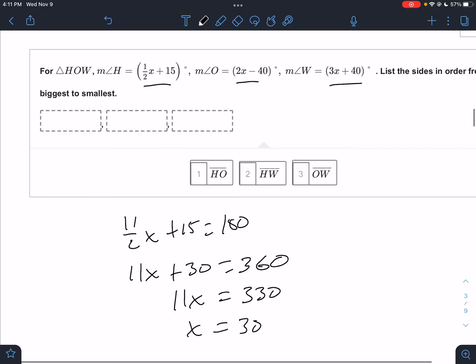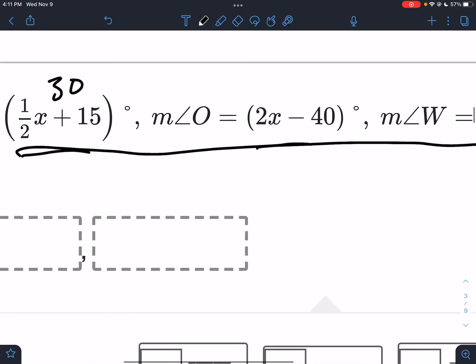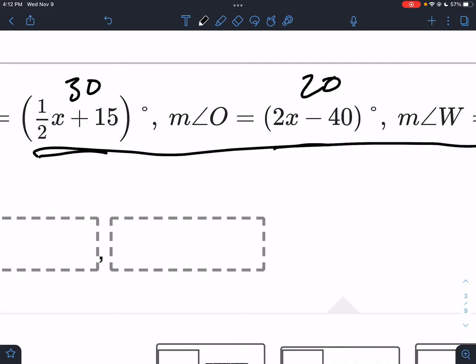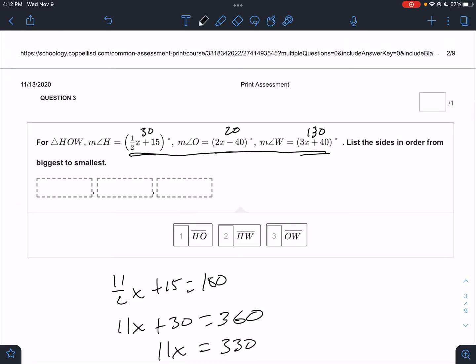So 11x + 30 equals 360, 11x equals 330, x equals 30. So if x is 30, and I know you guys can get that, the three angles had to add up to 180. If x is 30, let's plug it in. 30 times a half is 15 plus 15, this would be 30. 30 times 2, 60 minus 40, 60 minus 40 would be 20. 90 plus 40 would be 130. Make sure it adds up to 180, and it does.